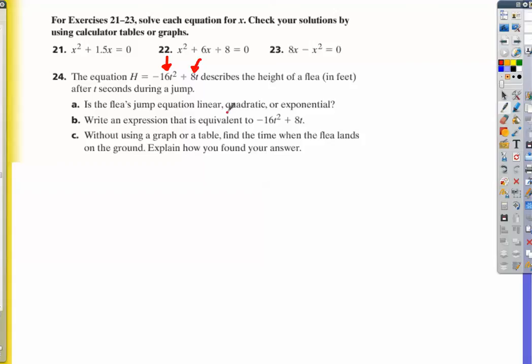Obviously, this is a quadratic expression because of the t squared. Write the expression in factored form. So negative 16t squared plus 8t.